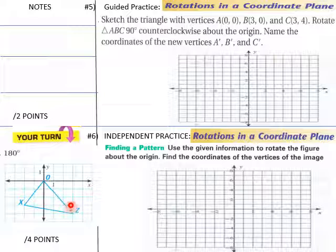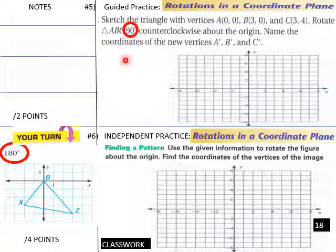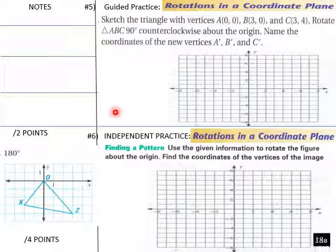So, it doesn't really tell us here. Use the given information to rotate the figure about the origin. So, I would do a 90 here. Students, do a 90 degree rotation here for number 6. Oh, here it is. Here's your number 80. I'm sorry. So, you have a 180 degree rotation of this triangle here. And then this is a 90 degree. So, there we go. Thank you. So, those are our rotations. Okay.